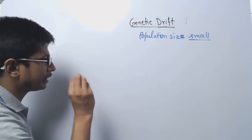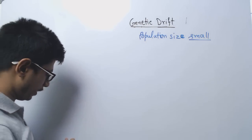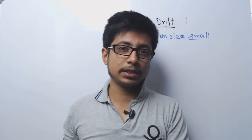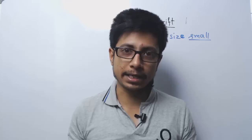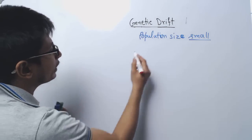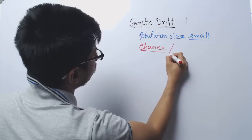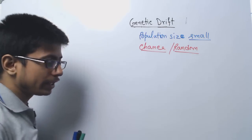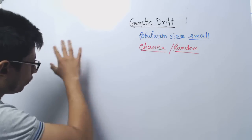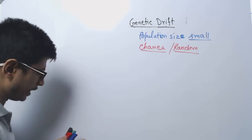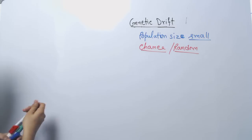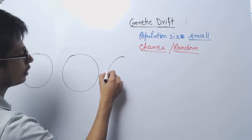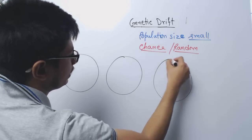If you look at genetic drift, this complete phenomenon of changing the allele frequency of a population is due to chance and randomness. Let us say in a population — let us try to think of this phenomenon with an example. In this case, I will be drawing what these complete population scales look like, showing different proportions of the allele frequency that we are observing.